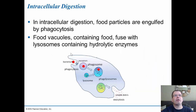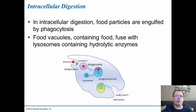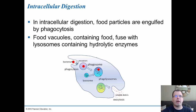Intracellular digestion occurs when food particles are brought into a cell via phagocytosis, forming a phagosome that attaches to a lysosome. The lysosome contains enzymes that break the material down, and the resulting molecules are either absorbed by the cell or released through exocytosis. This occurs in cells during the absorption process once material has been broken down into small morsels.